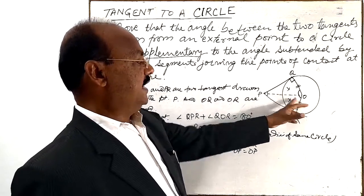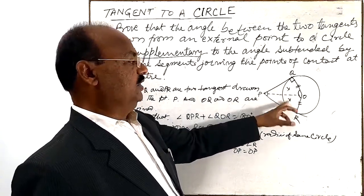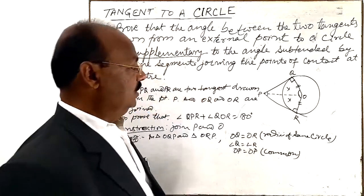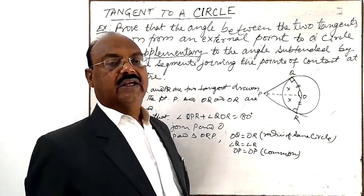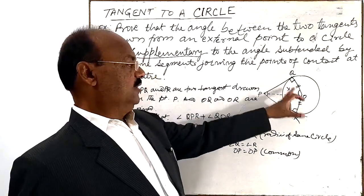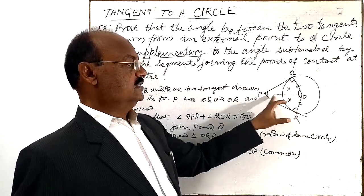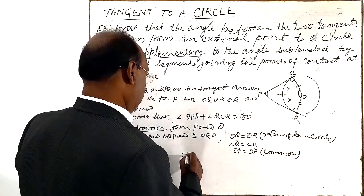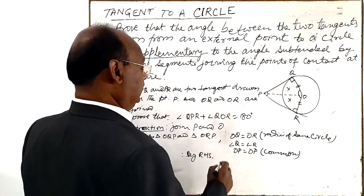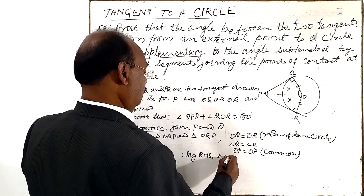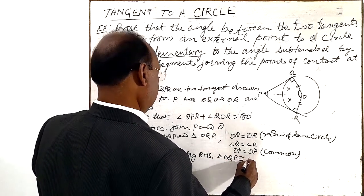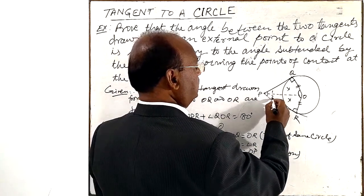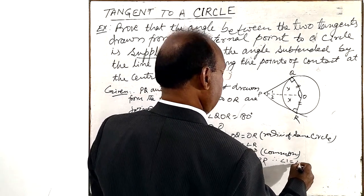Side OP is common to both triangles, and it is important to note that OP is the hypotenuse to both triangles. So OP equals OP, which is common. Therefore, by the RHS condition, these two triangles are congruent: triangle OQP is congruent to triangle ORP. Therefore, angle 1 is equal to angle 2.